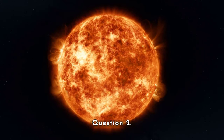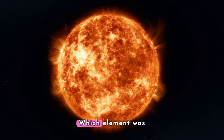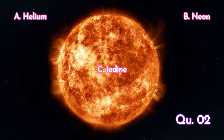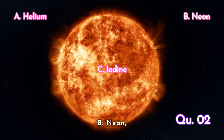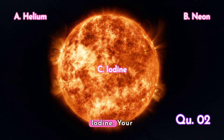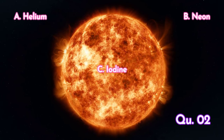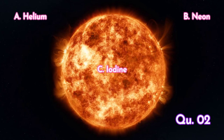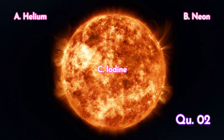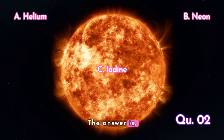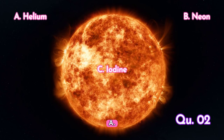Question 2. Which element was discovered on the sun before it was found on Earth? A, helium. B, neon. C, iodine. Your time starts now. The answer is A, helium.